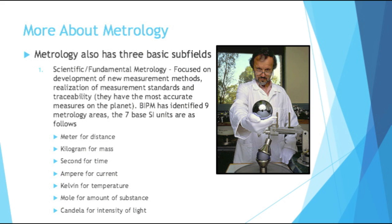The International Bureau of Weights and Measures has identified nine metrology areas. Stemming from that, the seven base SI units are as follows: for distance, the meter; for mass, the kilogram; for time, the second; for current, the amp; for temperature, kelvin; for amount of a substance, moles; and for intensity of light, candela. If you're American, you might notice that a lot of these standard measures are part of the metric system. I'm a big proponent of the metric system, and this is just another reason why.